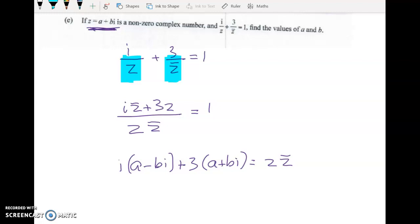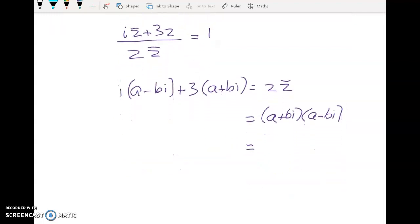Now z times z bar is a plus bi times a minus bi which is the sum of two squares, so it's a squared plus b squared. So the right hand side is looking good.